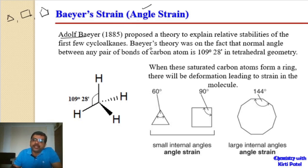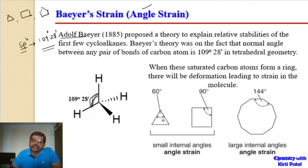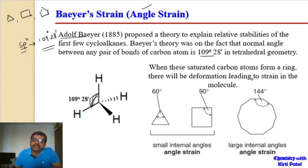For a normal tetrahedral sp3-hybridized carbon, the bond angle is 109 degrees 28 minutes. In a tetrahedral geometry, the angle between the C-H bonds in methane is 109 degrees 28 minutes. When bonds are joined together to form cyclic compounds, these angles vary from the normal angle of 109 degrees 28 minutes, giving rise to deformations which lead to strain in the molecule.